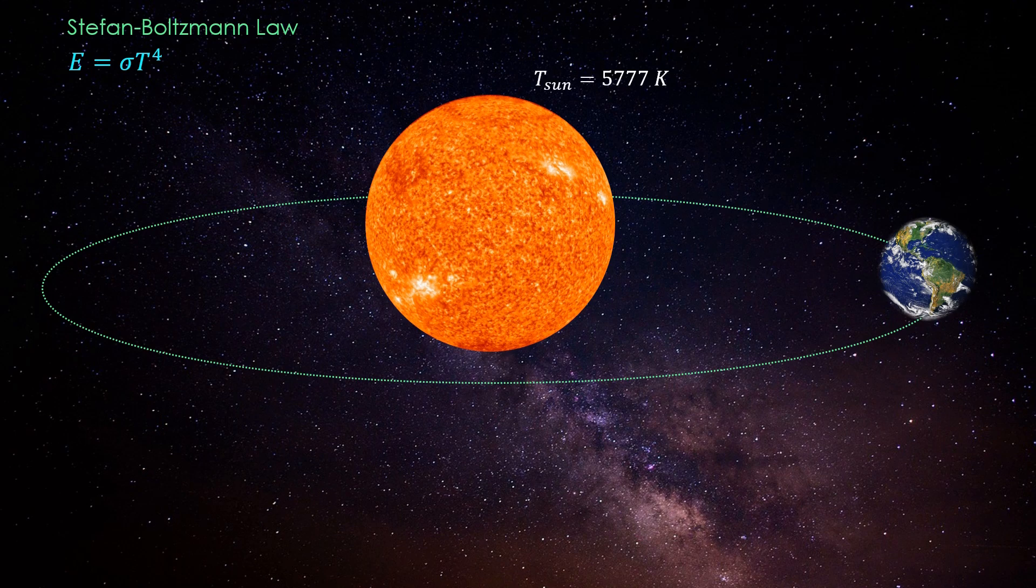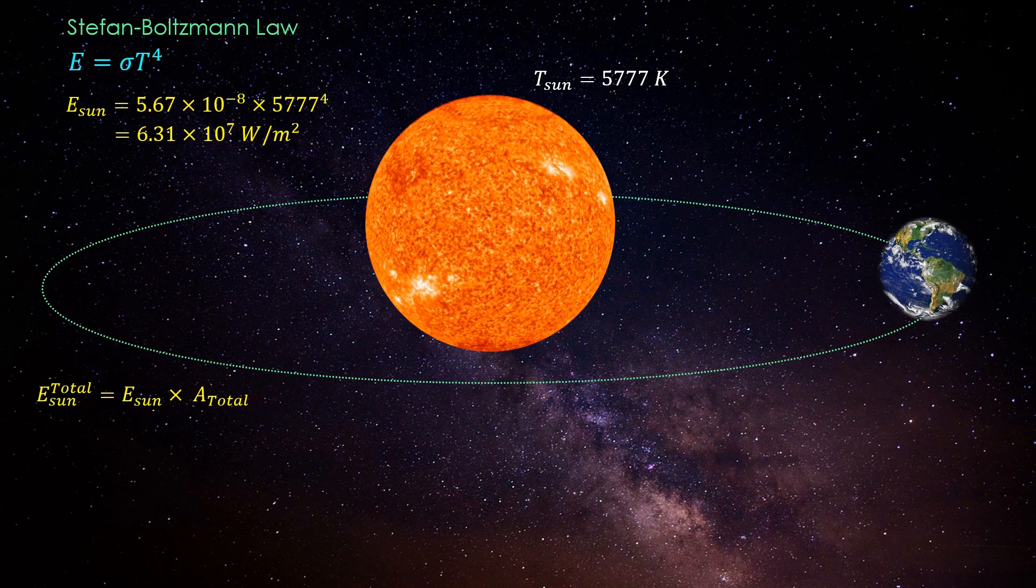Considering the temperature of sun's surface as 5777 Kelvin, radiant energy emitted per unit area by sun comes to be 6.31 times 10 to the power 7 watt per meter square. To calculate the total radiant energy emitted by sun, we multiply the value of E_sun with the total area of sun.